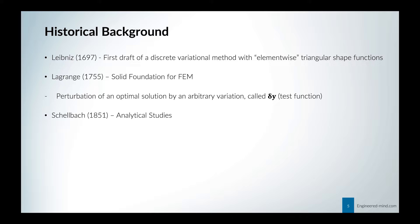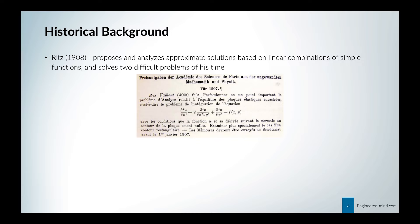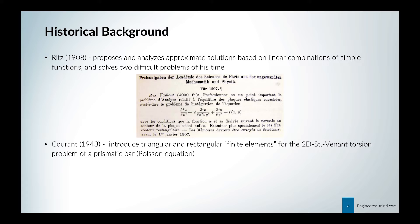Schellbach came in 1851 with some analytical studies on variational problems. Rayleigh followed in 1877, doing numerical analysis on these problems. Ritz came up in 1908, proposing and analyzing approximate solutions based on linear combinations of simple functions. He solved two difficult problems of his time — the linear elastic Kirchhoff plate problem with a variational method. The main motivation of Ritz at that time was the announcement of the Prix Vaillant in 1907 by the Academy of Science in Paris. Courant, in 1943, introduced triangular and rectangular finite elements for the 2D Saint-Venant torsion problem.